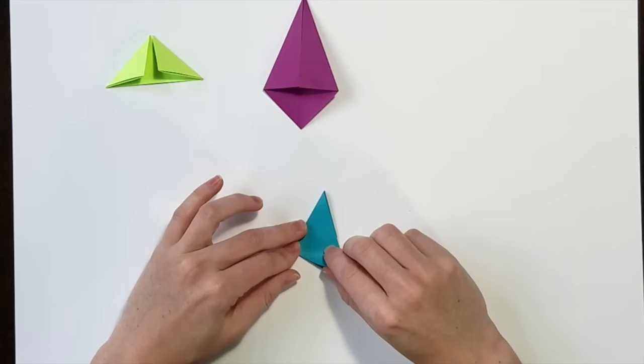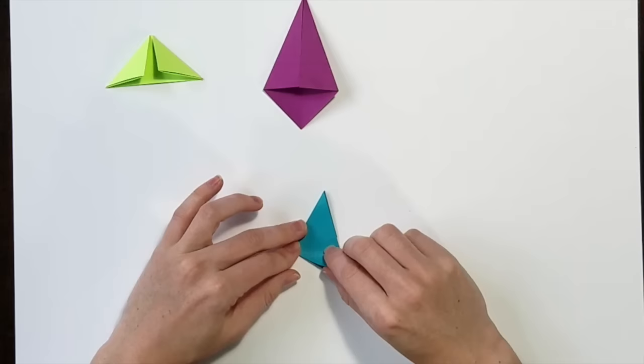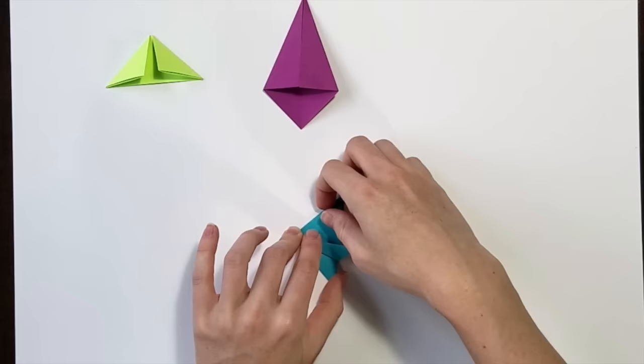Now with this top layer of paper, I'm just going to take the top part and fold it in like that. So I'm just taking this line and lining it up to the middle and do the same to the opposite side. And that is the samurai fold.